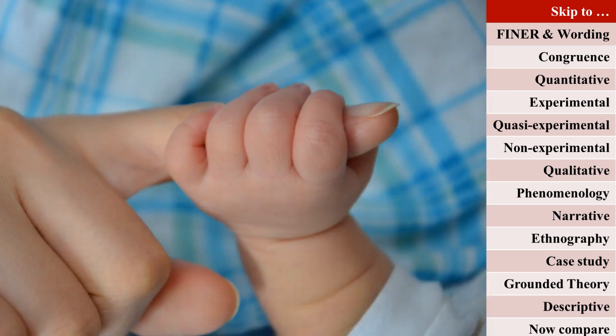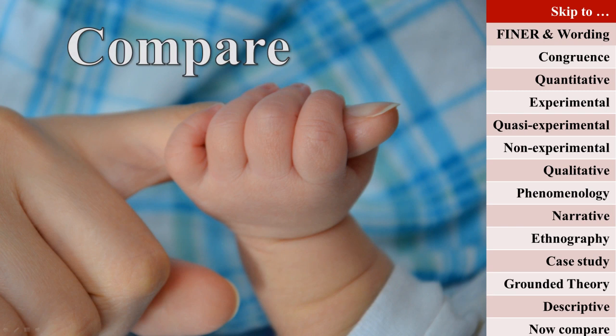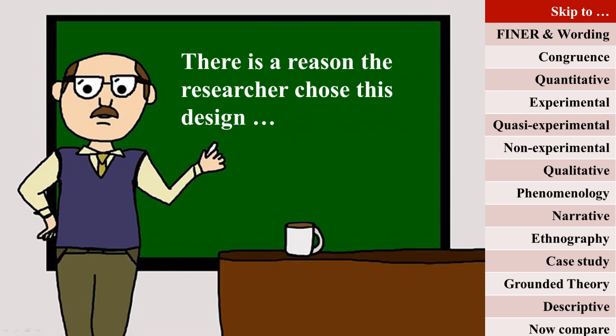Now compare the purpose statement of the study you are looking at to the major focus of each of these methodologies. Look for key words or phrases. If the study does not use one of the methodologies covered in this video, a quick Google search should help you come up with a basic understanding of the purpose of the methodology they use. If your study is well written, it should also contain a justification for the methodology selected. This justification should tell you if the aim of the question matches the aim of the methodology, but it doesn't hurt to double check that another methodology may have been better.